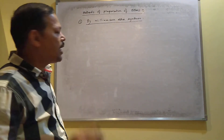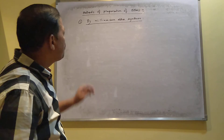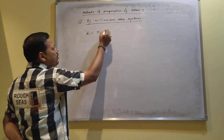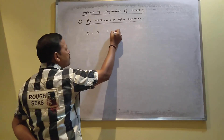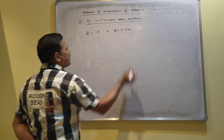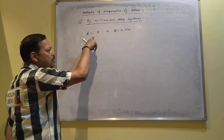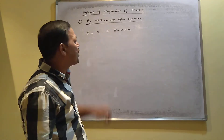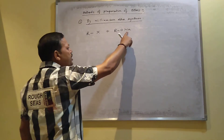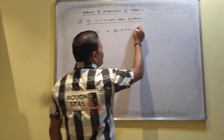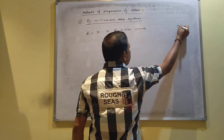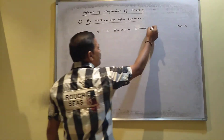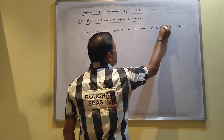This reaction we already covered in the haloalkane sector. When a haloalkane reacts with sodium alkoxide, the sodium combines with the halogen to form sodium halide — like sodium chloride or sodium bromide — and the R group combines with the OR group to form the ether.